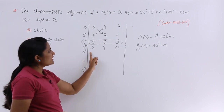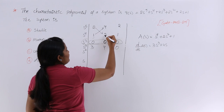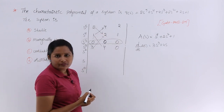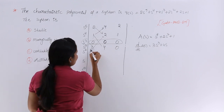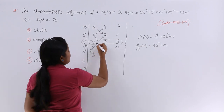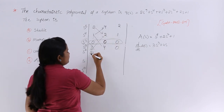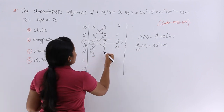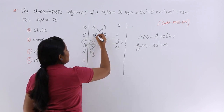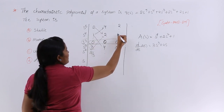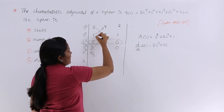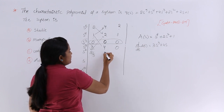Now to get the s^2 row: 4×2 − 1×4 = 8 − 4 = 4, divided by 4 = 1. Wait, let me recalculate: 3×2 − 1×4 = 6 − 4 = 2, divided by 3 = 2/3. For the next element: 3×1 − 1×0 divided by 3 = 3/3 = 1.